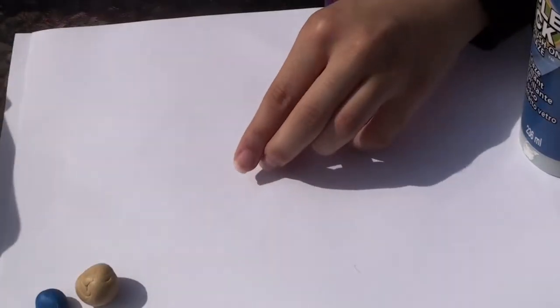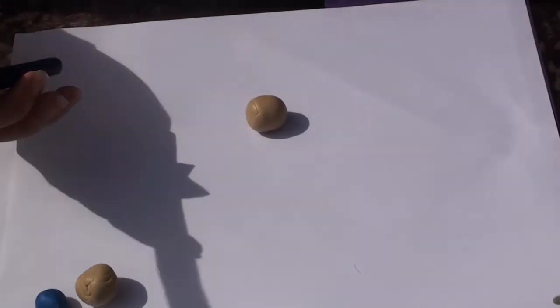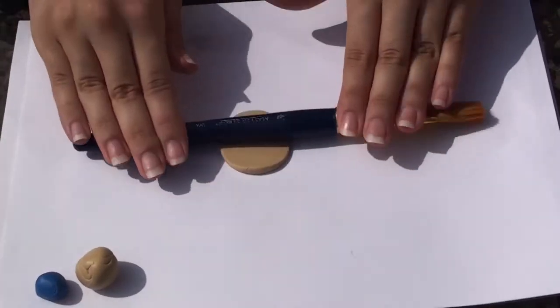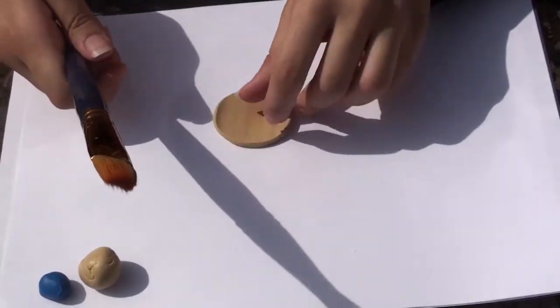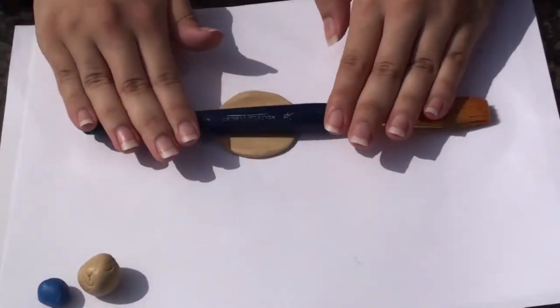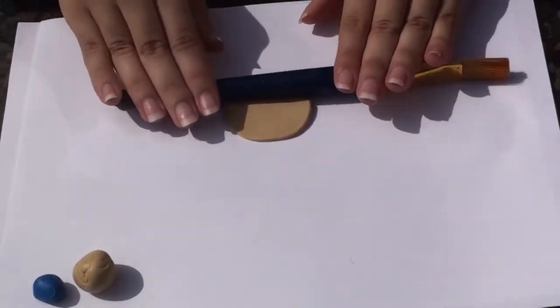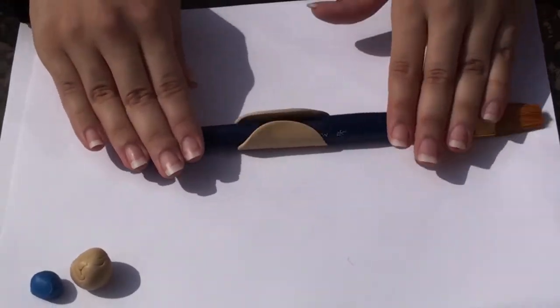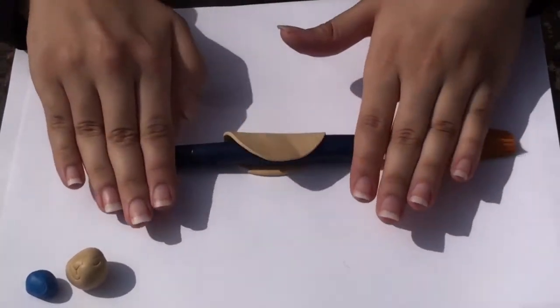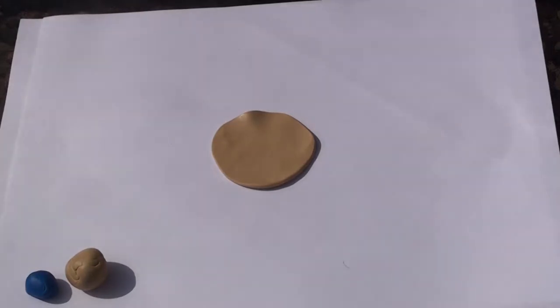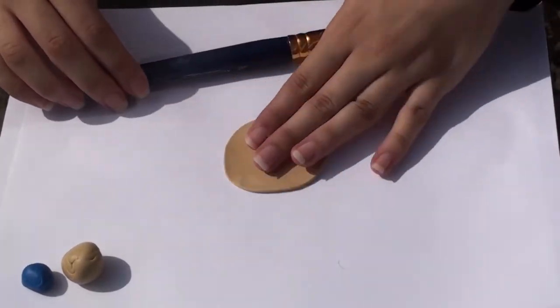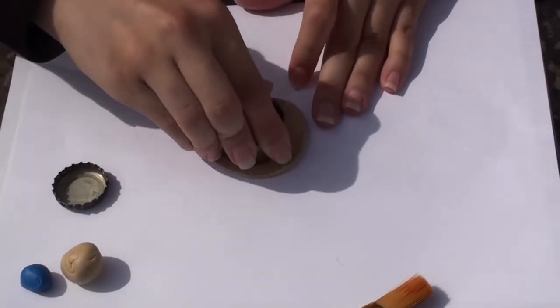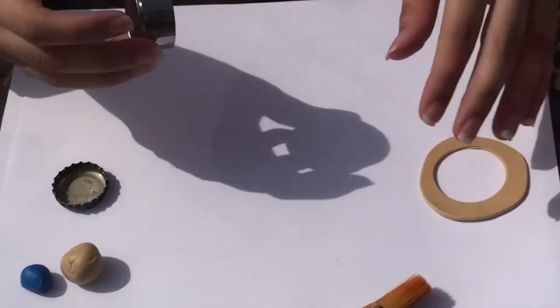Our first step will be to roll out some ecru clay for the pie shell. Cut out a circle of clay with your cookie cutter and gently press it into the bottle cap, trimming the edges off with your fingers.